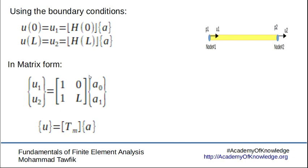This matrix is called the transformation matrix. It transforms our system from the generalized coordinates a0 and a1 to the generalized coordinates u1 and u2.